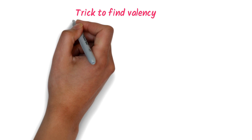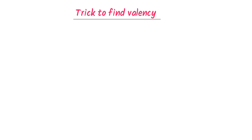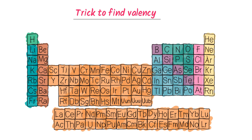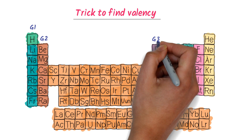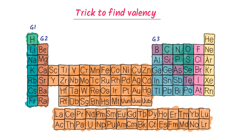Let me teach you the most easy trick to find valency of any element in the periodic table. We know that group 1, group 2 and group 3 elements are metals. So the valency of group 1 elements is 1, the valency of group 2 elements is 2, and the valency of group 3 elements is 3. Therefore, remember that the valency of metals is their respective group number. For example, the valency of sodium is 1 because it is present in the first group, and the valency of calcium is 2 because it is present in the second group.